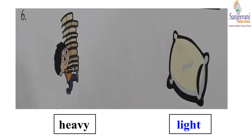Our last word is word number 6, heavy. The opposite word for heavy is light. Have a look at the pictures. See this boy, he is carrying so many books. So it's heavy. And the next picture, a pillow. Pillows are always soft and light in weight.